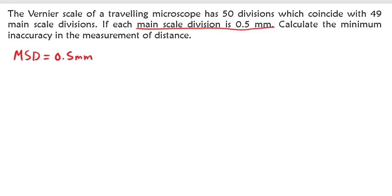Since 50 vernier scale divisions coincide with 49 main scale divisions, we can form an equation which will look like this: 50 vernier scale divisions coincide with 49 main scale divisions.